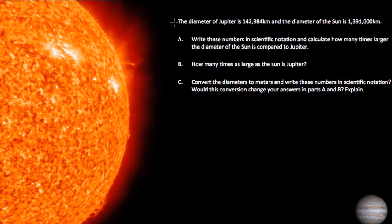We've got a problem here that tells us the diameter of Jupiter is 142,984 kilometers, and the diameter of the sun is 1,391,000 kilometers. In part A, they ask us to write these numbers in scientific notation and calculate how many times larger the diameter of the sun is compared to Jupiter. So how might we do this?